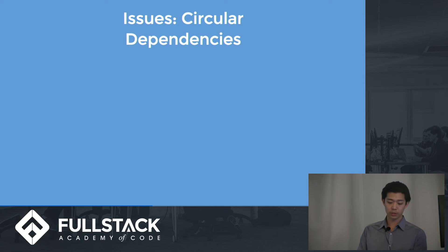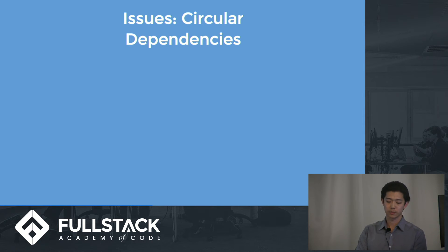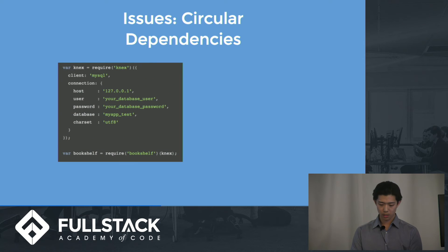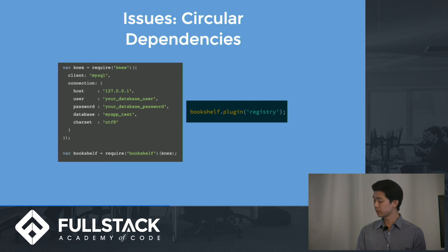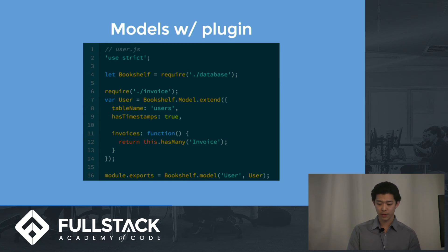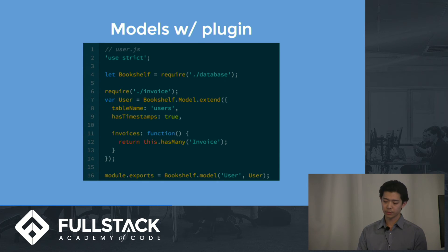One issue regarding Bookshelf is circular dependencies. What are they? They're a relation between two or more modules which either directly or indirectly depend on each other to function properly. If your models have any relations with each other and are in separate files, you might encounter this problem. Node can return unfinished copies of modules when you define these circular dependencies. Adding a specific plugin might help solve this issue by allowing you to specify relations between models using a string rather than a variable. As you can see, instead of having variables in the hasMany association on line 12, we use a string instead. To access the string form of invoice, you can pass it as the first parameter in the model definition, or when you export the model you can export the string as well, as shown on line 16.